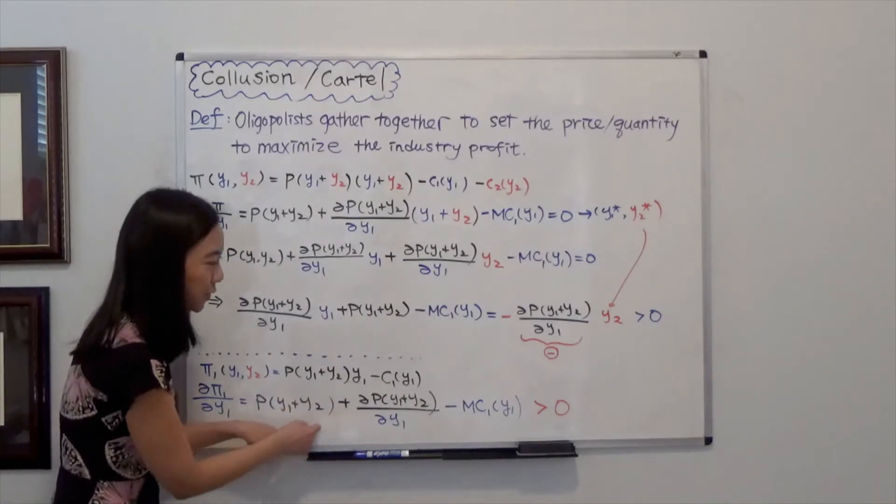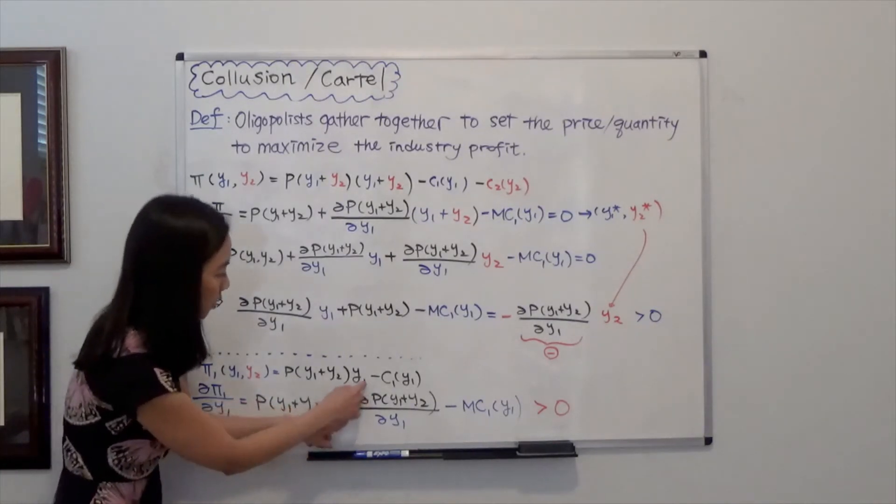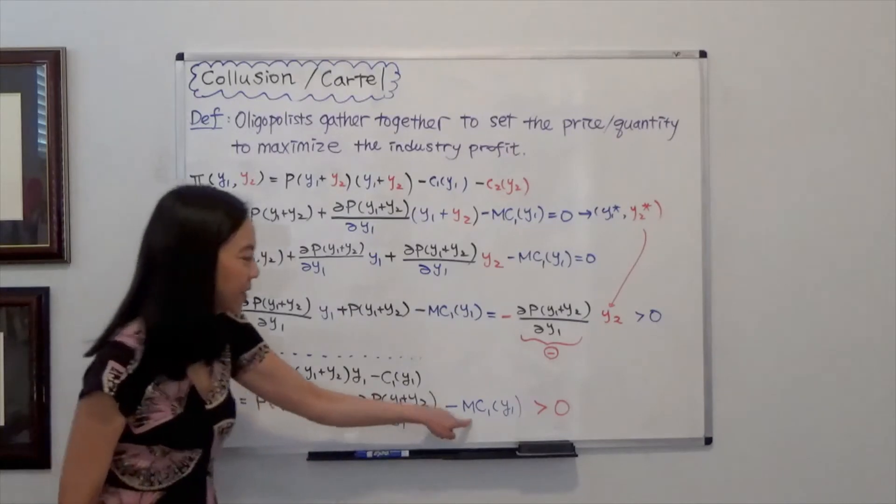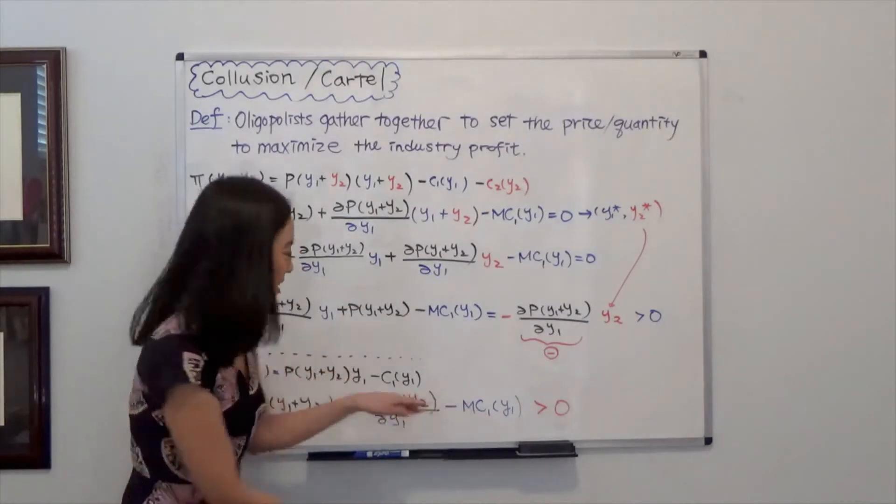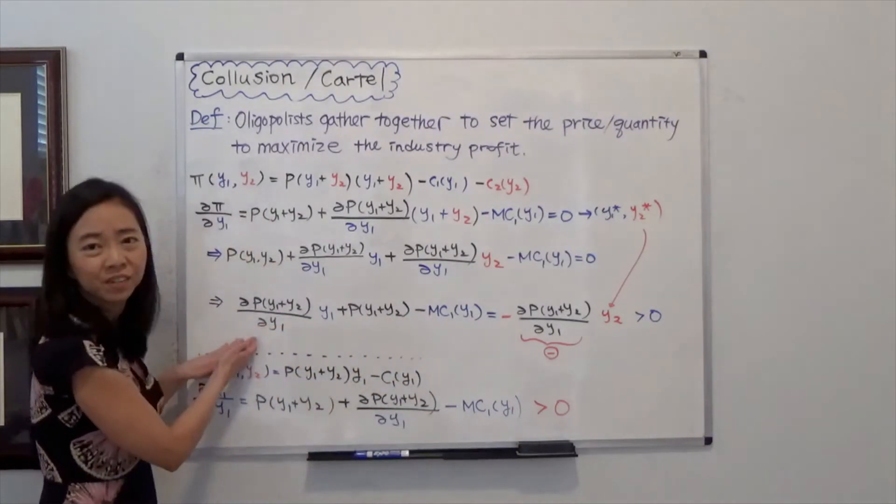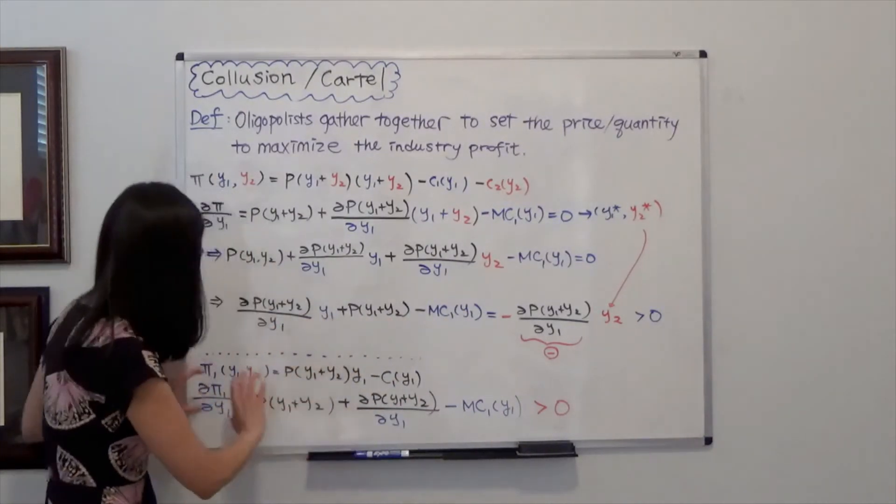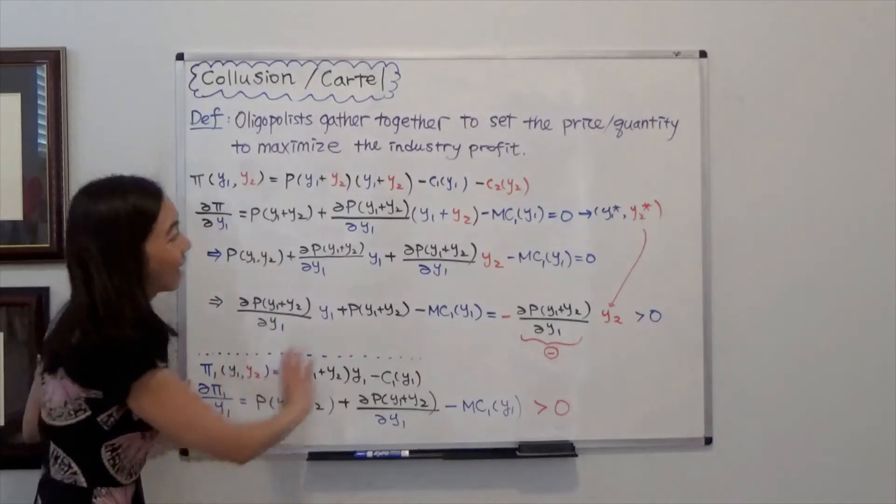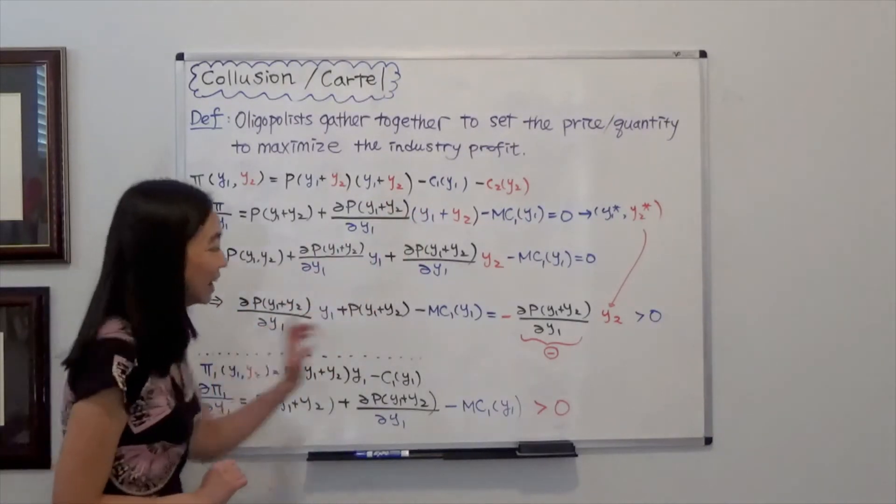So that would be the price, plus partial pi, partial p, partial y1 minus the marginal cost of firm 1. Notice that these three terms are exactly the three terms here. And we have proved that this marginal profit of firm 1 after we achieve the cartel is positive.